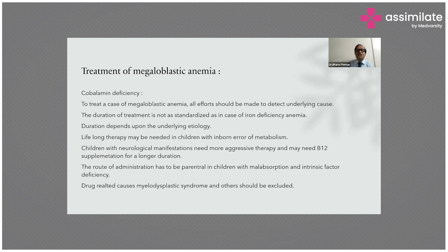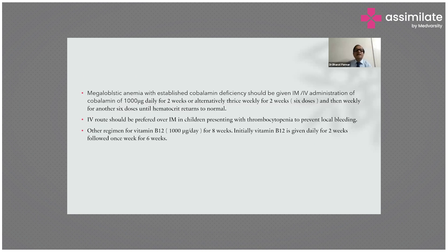Children with neurological manifestations need more aggressive therapy and may need B12 supplementation for a longer duration. The route of administration should be parenteral in children with malabsorption and intrinsic factor deficiency. Drug-related causes and megaloblastic myelodysplastic syndrome should be addressed during therapy. For established cobalamin deficiency, give intramuscular or intravenous cobalamin 1,000 microgram daily for 2 weeks, then alternately thrice weekly for 2 weeks (6 doses).